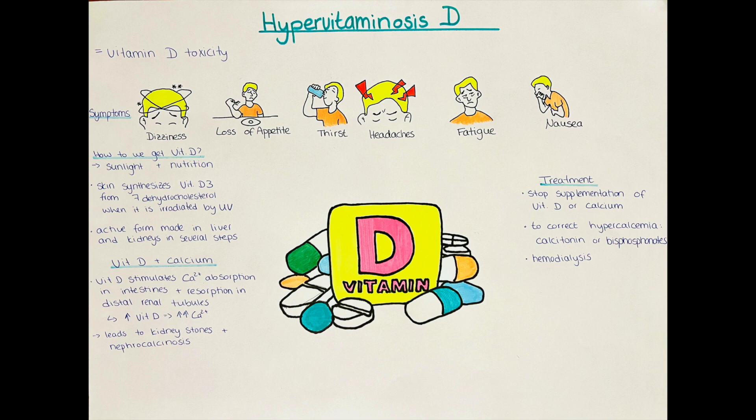The active form of vitamin D is 1,25-dihydroxyvitamin D. To reach this active form, it first needs to be converted in the liver to another form, which is then converted in the kidney to the active form. Specifically, vitamin D3 is converted in the liver to 25-hydroxyvitamin D, and then in the kidney it is further converted to the active 1,25-dihydroxyvitamin D3.